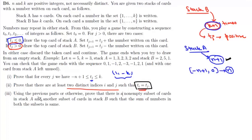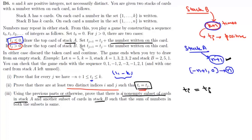The third part asks us to prove there is a non-empty subset of cards in stack A and another subset of cards in stack B such that the sum of numbers in both subsets is the same. From part two, we have two different indices i and j with T_i equal to T_j. Between these steps, we either add a card from stack A or subtract a card from stack B. Since T_i equals T_j, the net change from step i+1 through step j must be 0. This means the sum of cards drawn from stack A must equal the sum of cards drawn from stack B, which proves there exist non-empty subsets from each stack with equal sums.